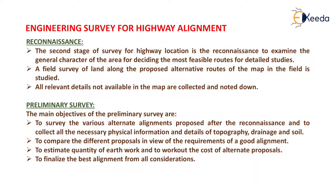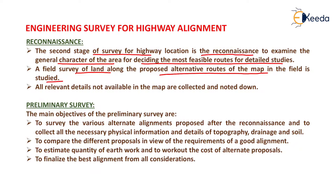The next stage is the reconnaissance survey. The second stage of survey for highway location is the reconnaissance, to examine the general character of the area for deciding the most feasible routes for detailed studies. In reconnaissance survey, we visit the site for detailing of features not available in the map. A field survey of land along the proposed alternative routes is studied and all relevant details not available in the map are collected and noted down.